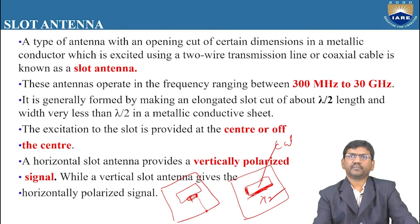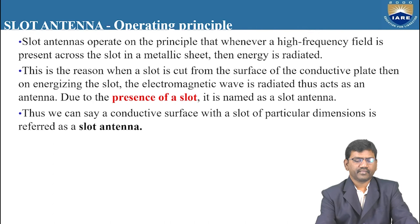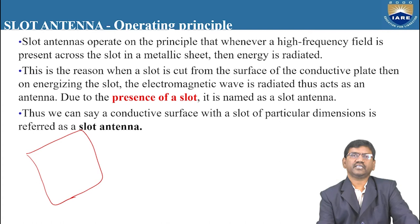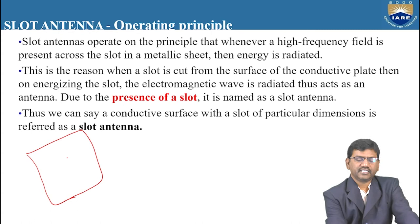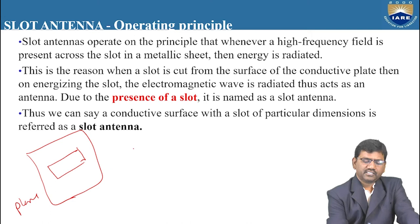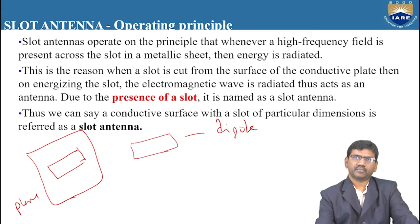A horizontal slot antenna provides a vertically polarized signal, while a vertical slot antenna gives a horizontally polarized signal. The polarization of the slot antenna depends upon how we cut the slot — whether horizontally or vertically. If we take a flat conducting sheet and cut it horizontally, the complementary structure resembles a dipole antenna, which is horizontally polarized.